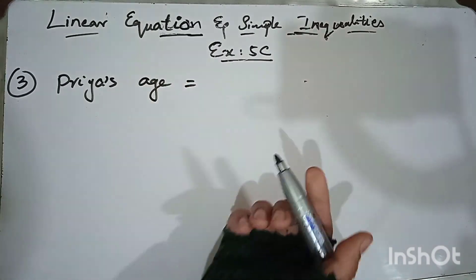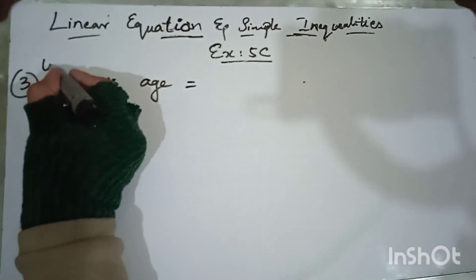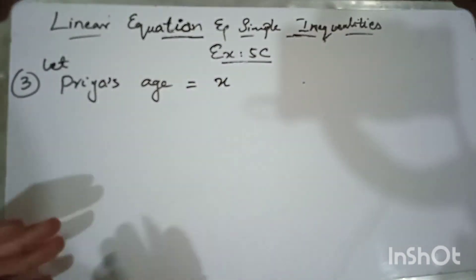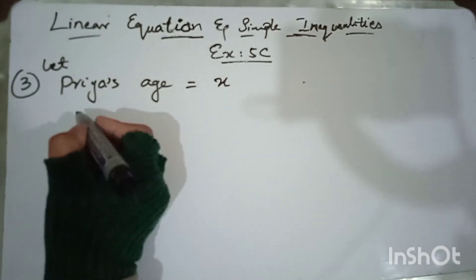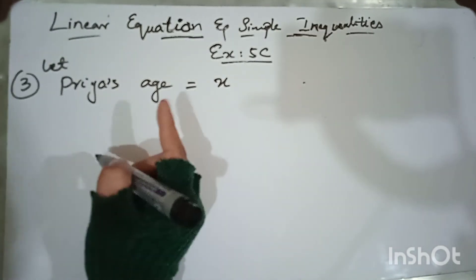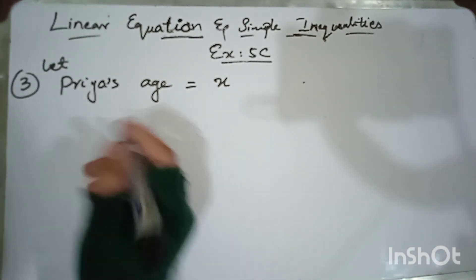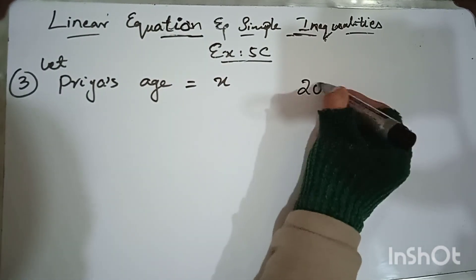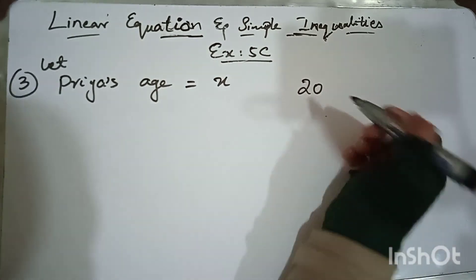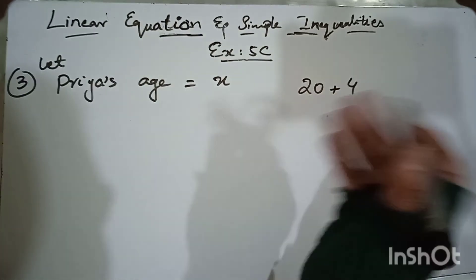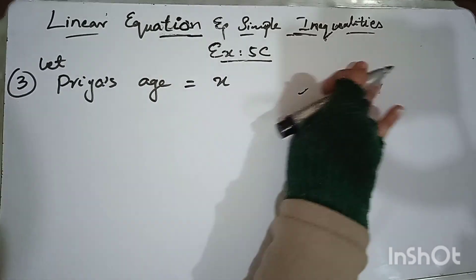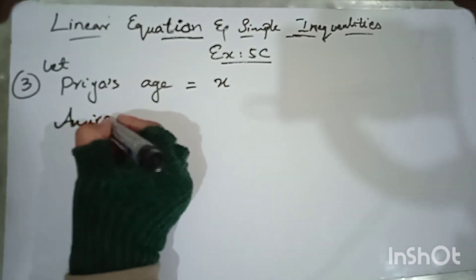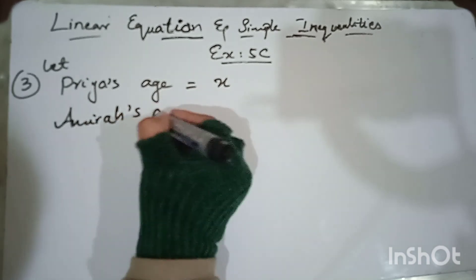Let Priya's age equal x. Since Amira is four years older, Amira's age is x plus 4. If someone is four years older than me and my age is 20, their age would be 24 — same logic applies. So Amira's age equals x + 4.